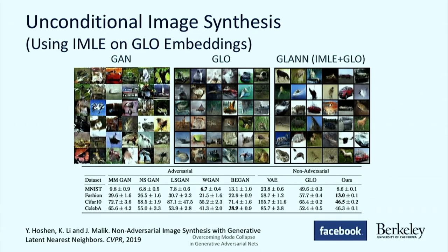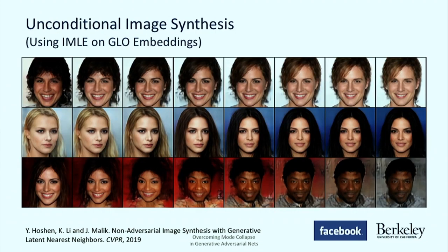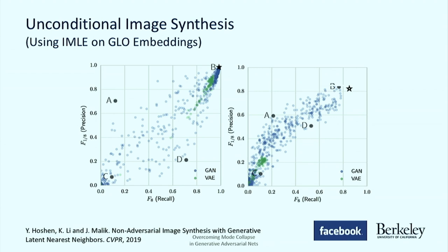For unconditional image synthesis — the classical setting of just generating samples — we can get smooth interpolations for faces. The most interesting result is a precision-recall plot for MNIST and CIFAR, where each dot represents one GAN variant or VAE: seven GAN varieties and one VAE, each trained on 100 different hyperparameter settings (800 dots total). Our method, represented by the star, outperforms all different GANs and VAEs in terms of both precision and recall on both datasets.